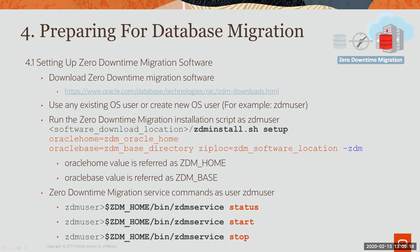Setting up ZDM is quite easy. There is a download link from OTN which will download a zip file. This zip file can be owned and executed by any OS user, new or existing. In our cases, we will be using a new user by the name of ZDM user. The installation is also very straightforward — it's the execution of a single script passing a couple of parameters, including Oracle Home value for ZDM Home and Oracle Base value for ZDM Base.